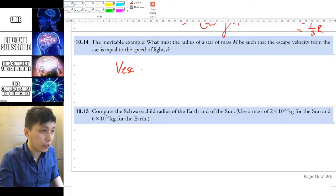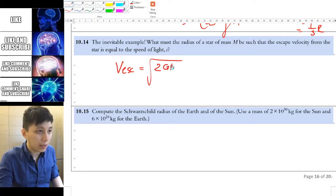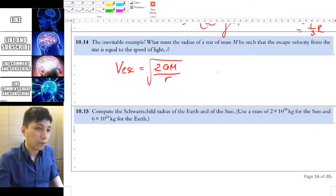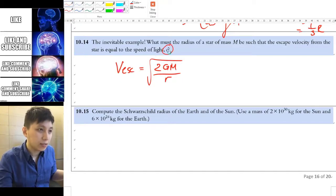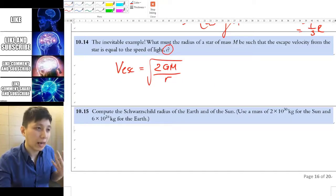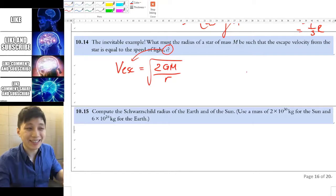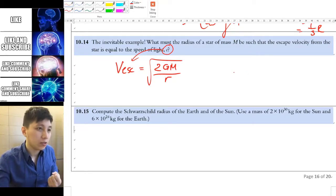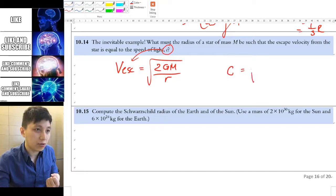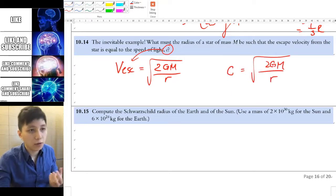So the equation that we derived earlier was simply root 2gm over r for the escape velocity. And since the velocity is now c, so that means we can plug in this value to it so that even with the speed of light, it cannot really escape. So we can say c equals to root 2gm over r and therefore this is pretty much a relationship that you can find.